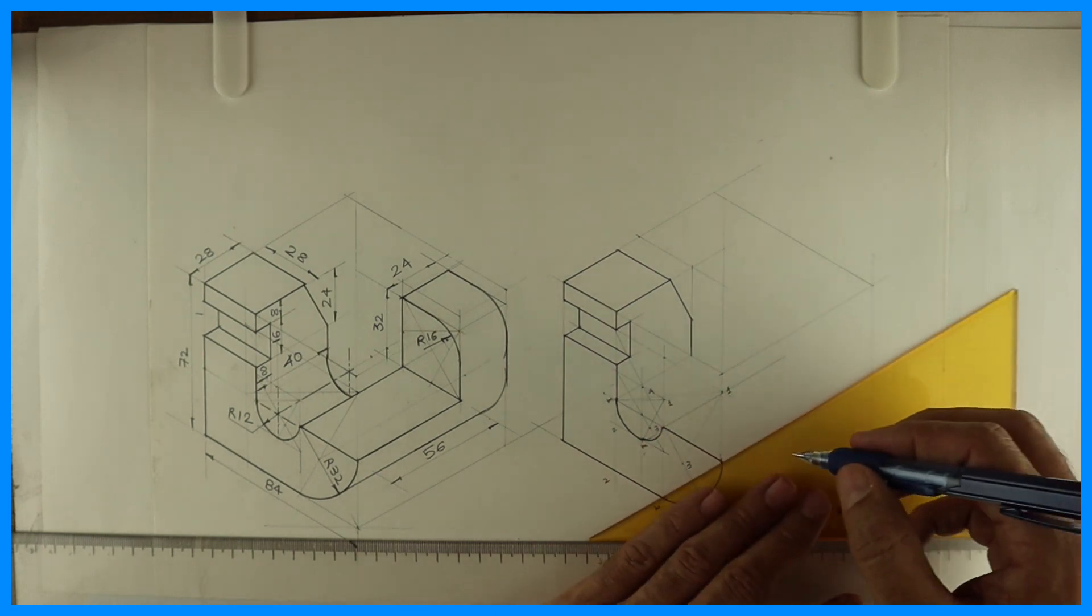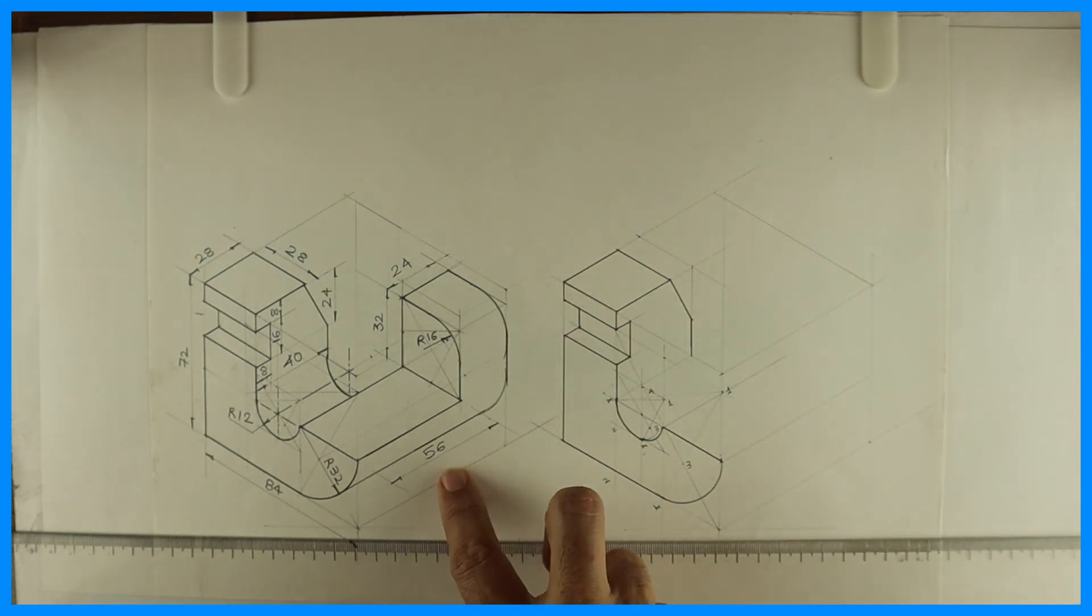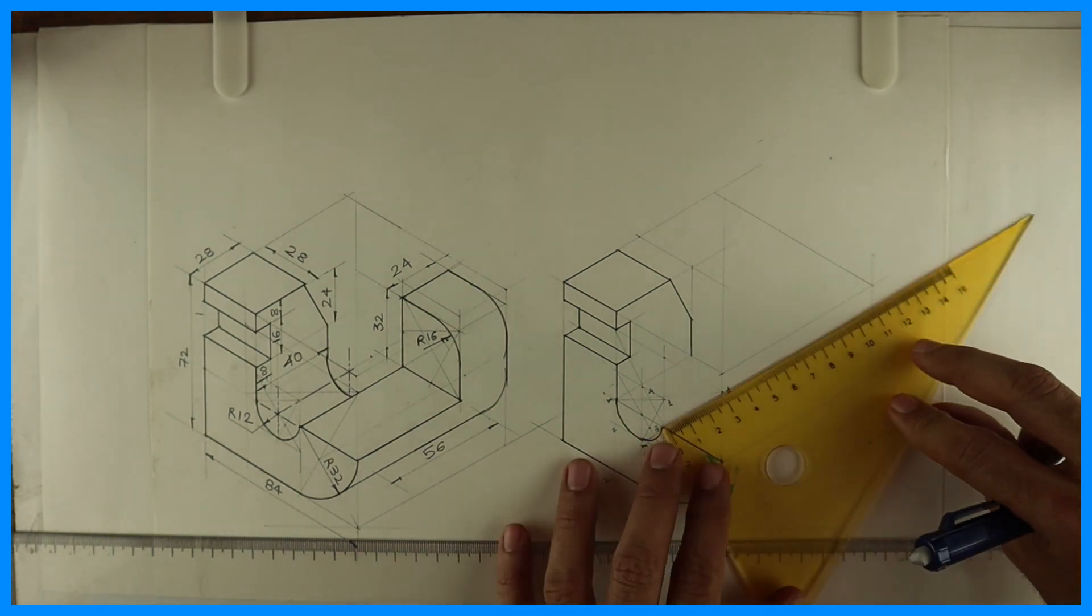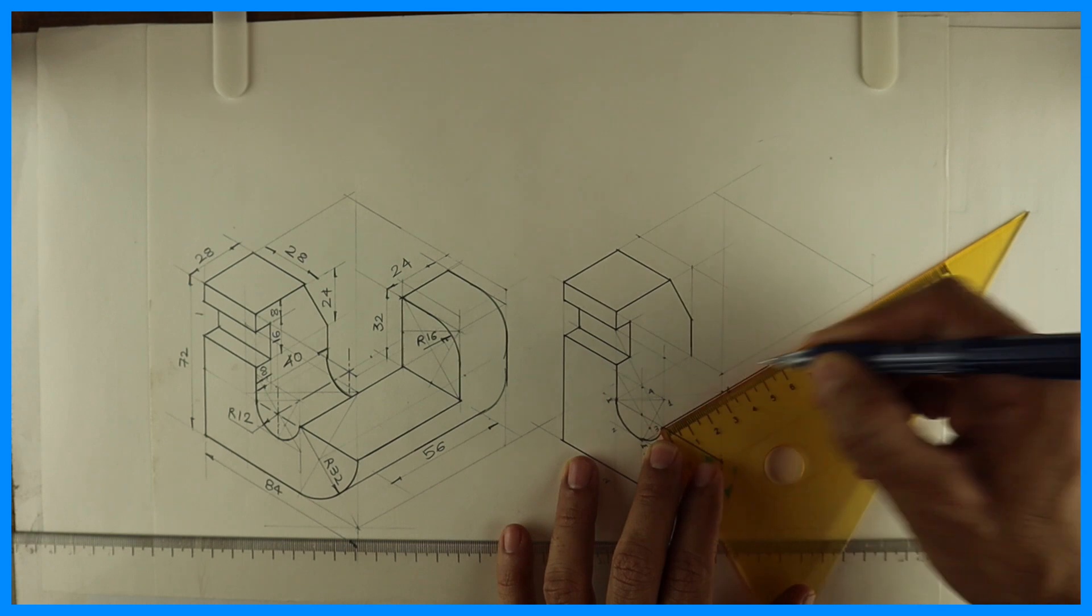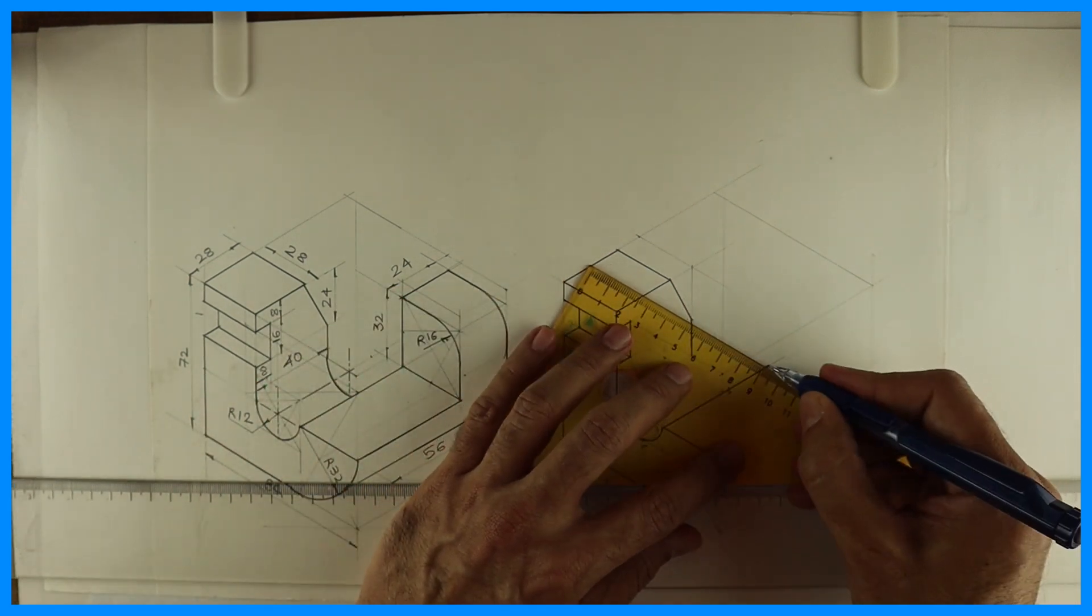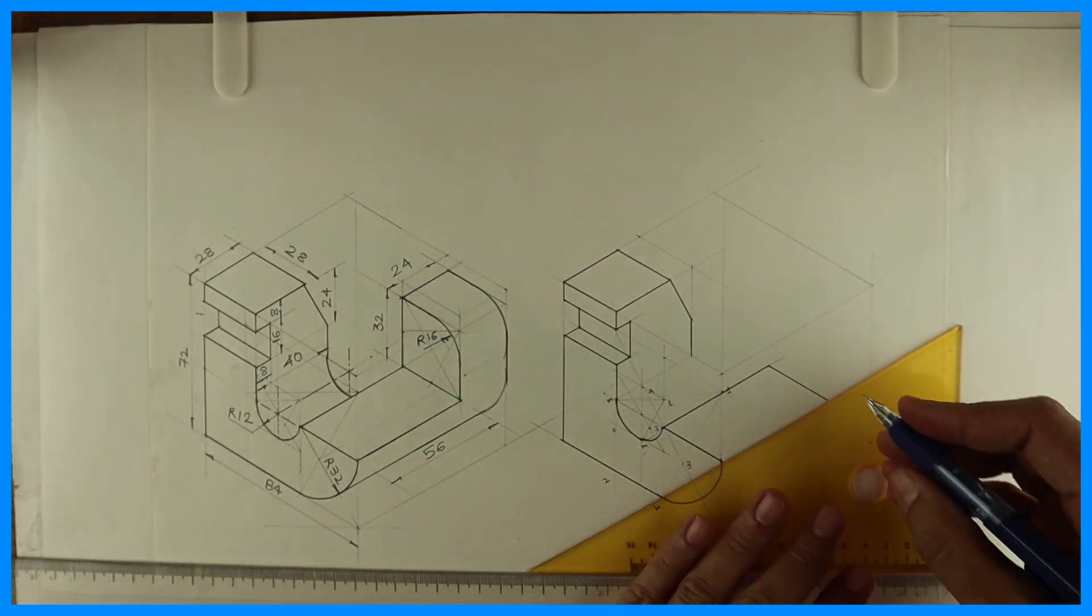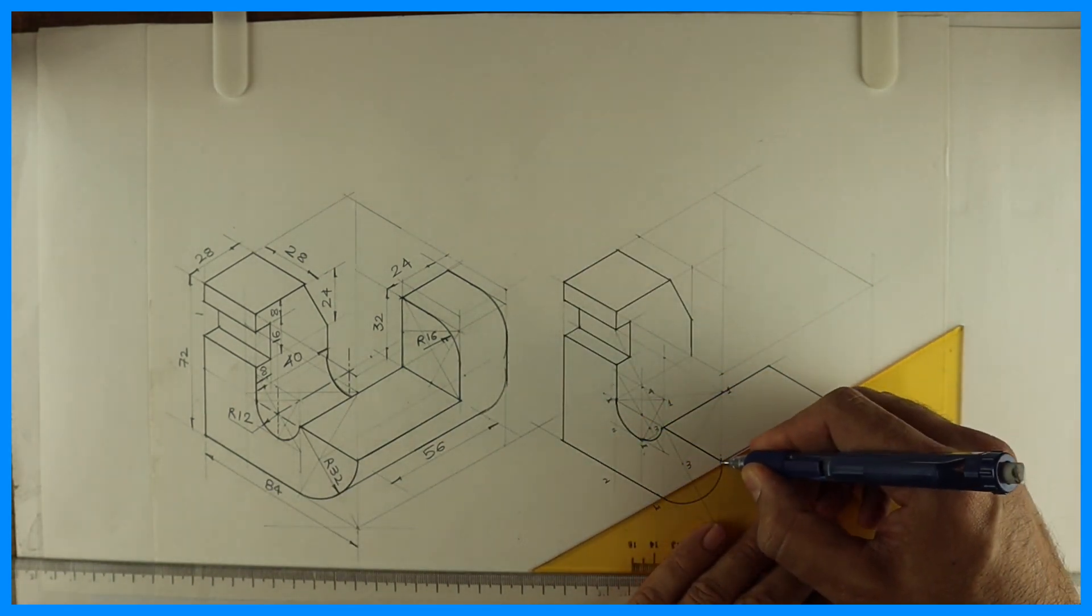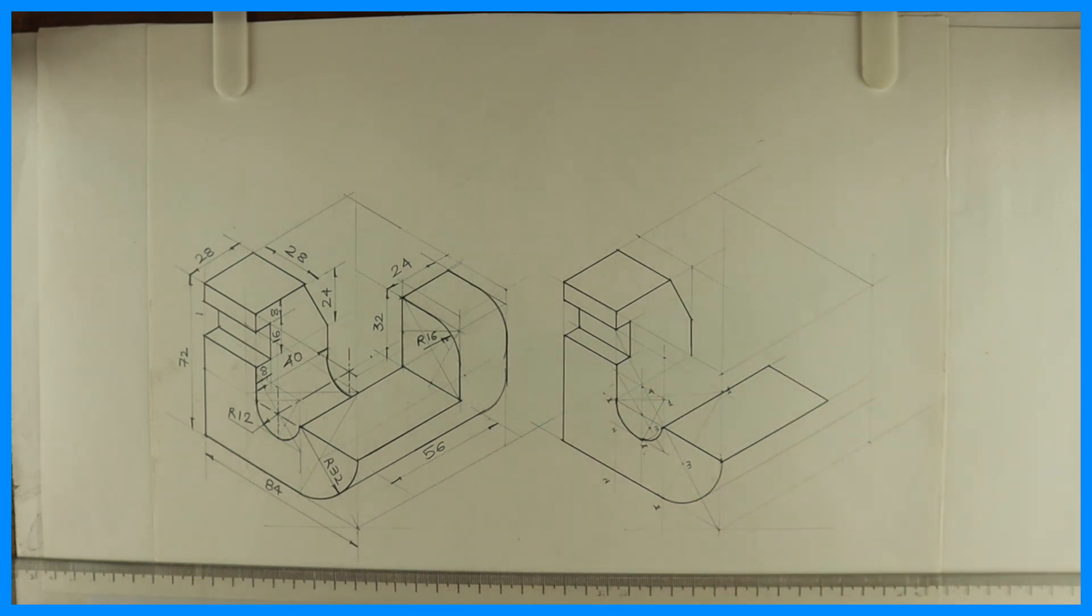Now if you see this line is inside by how much? 56. So you take 56. Then you take this part behind. Now we need to see this portion.